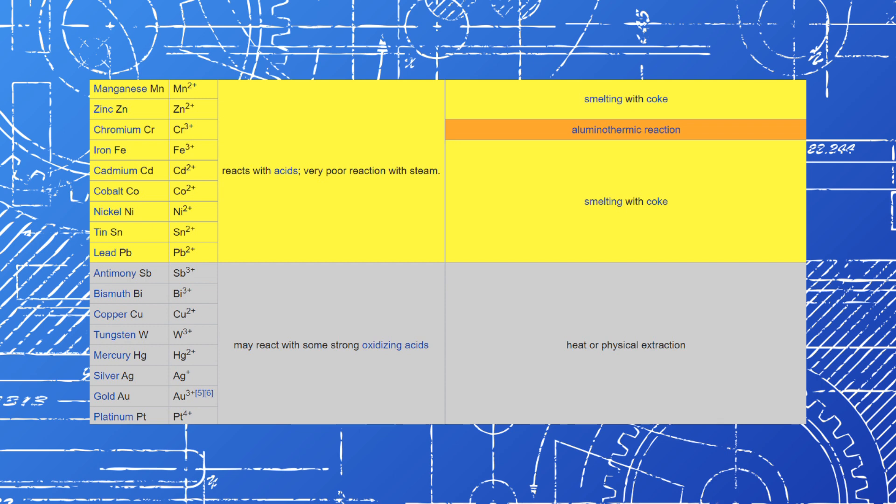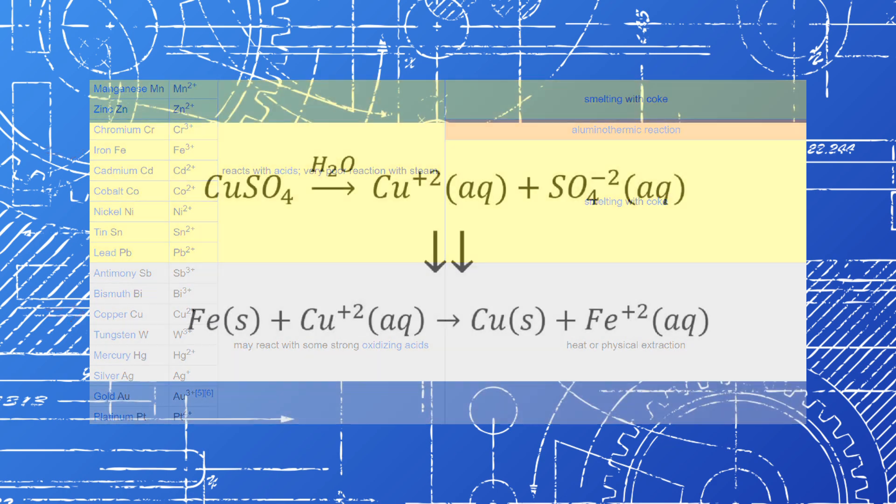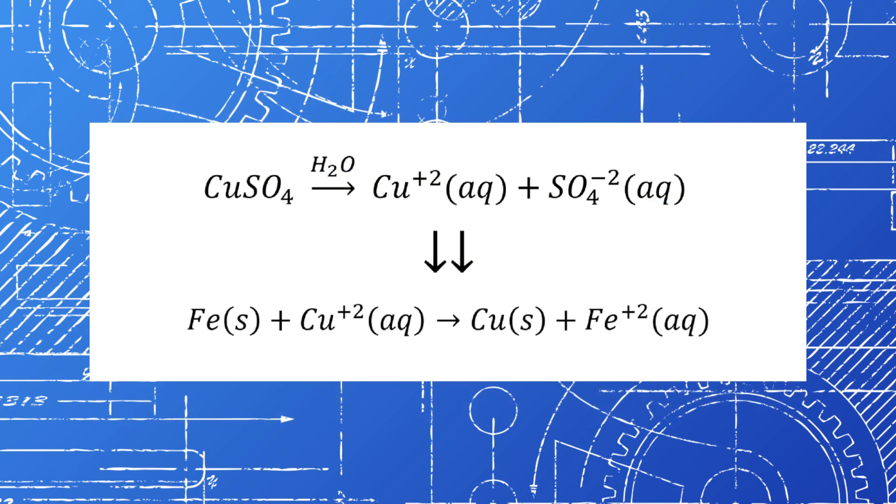The reactivity series of metals is shown here. You can see the location of iron with the symbol Fe here and the location of copper or Cu here. Now because iron has a higher position in the reactivity series than copper, the following single displacement reaction will occur.